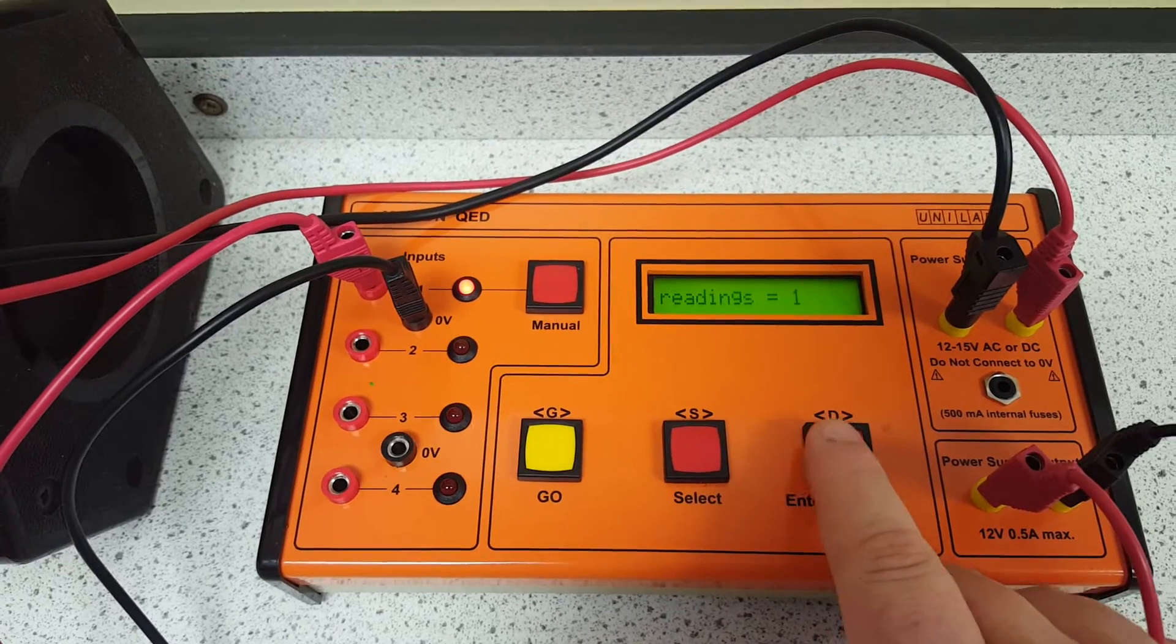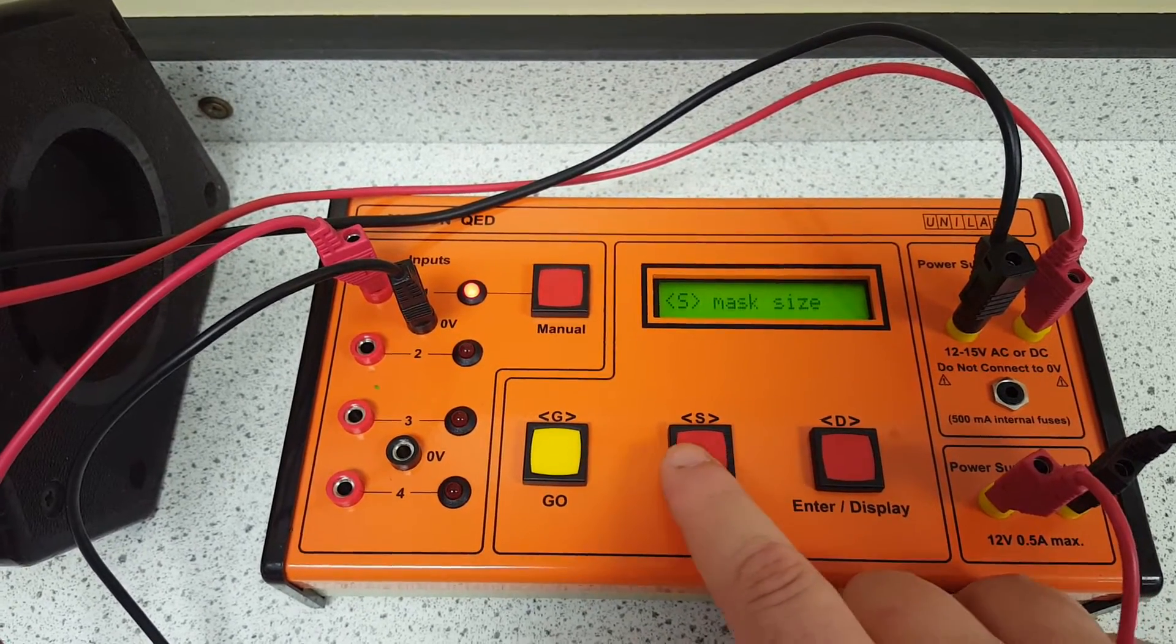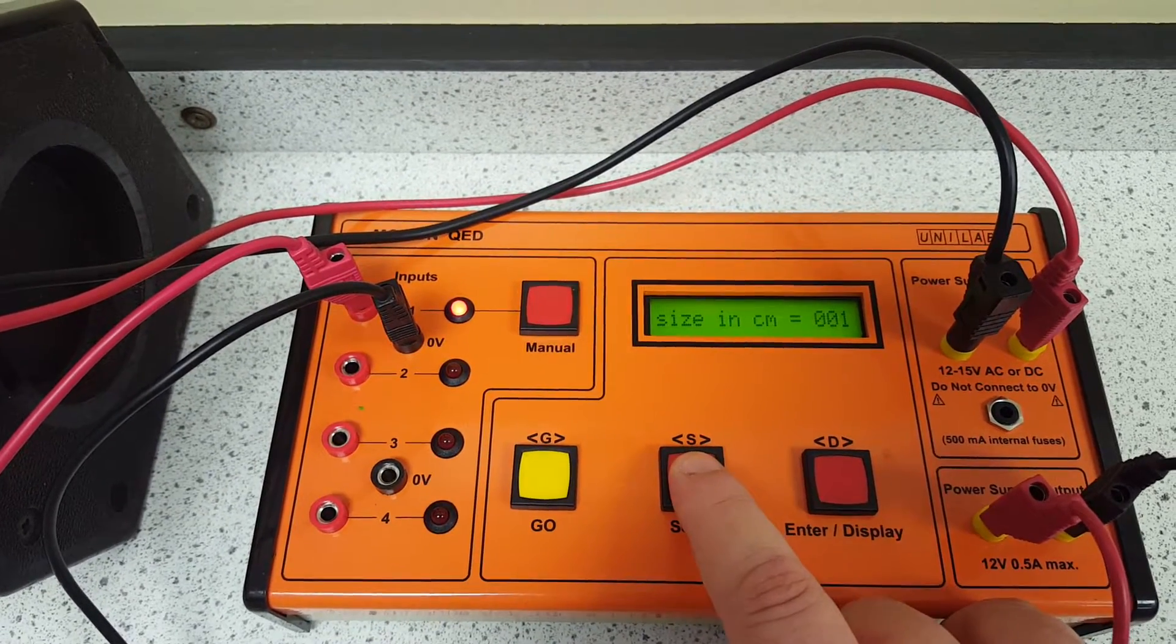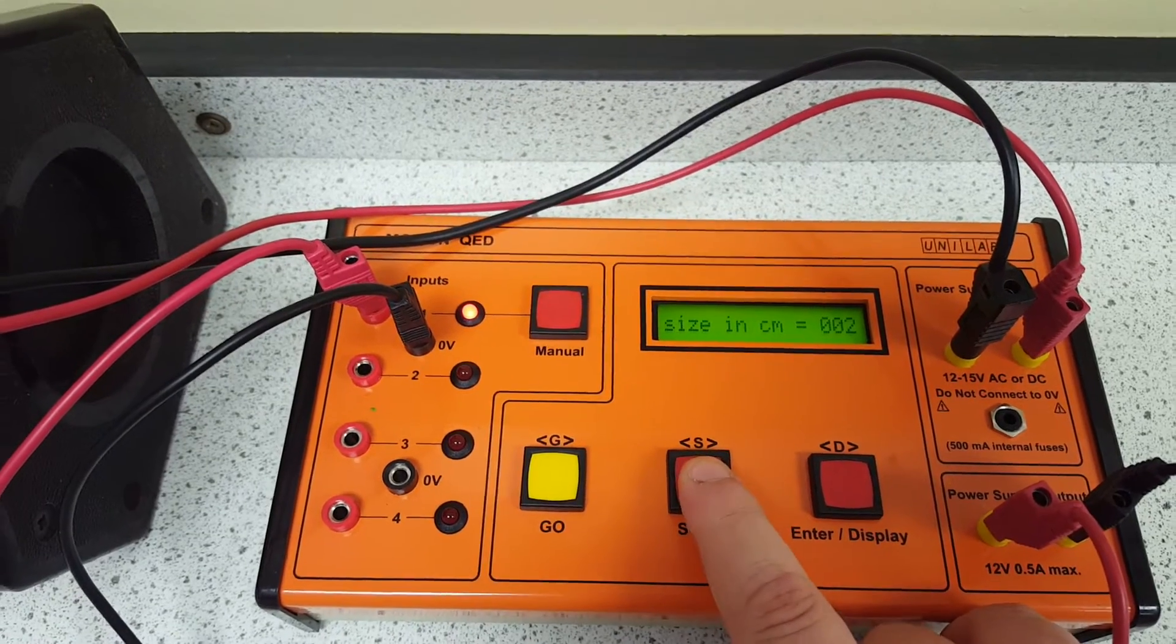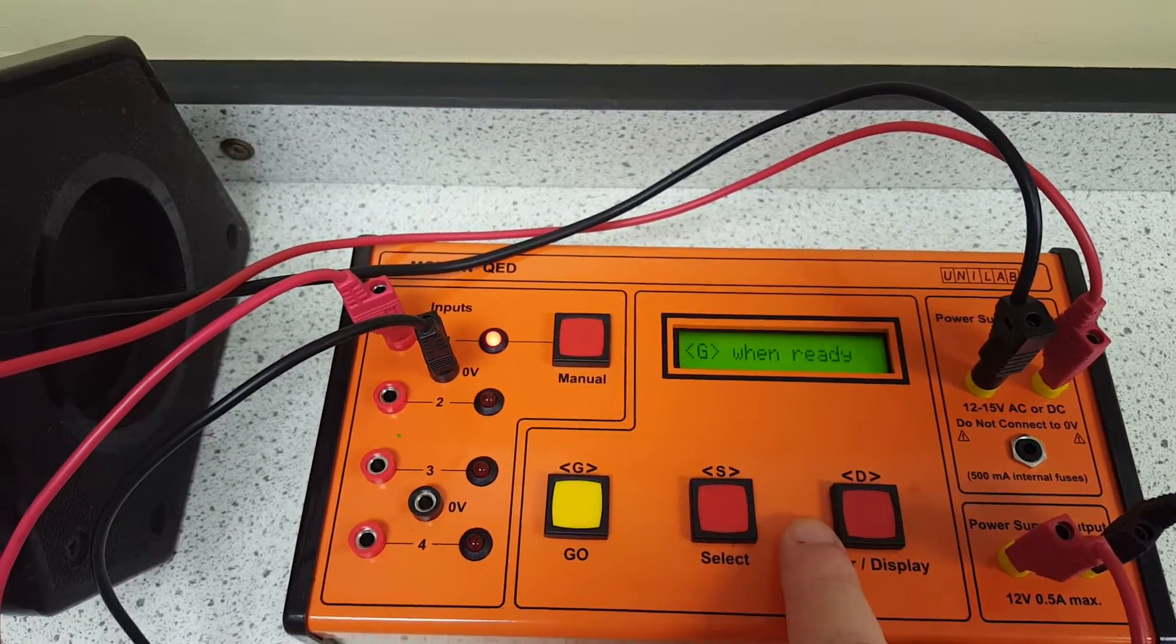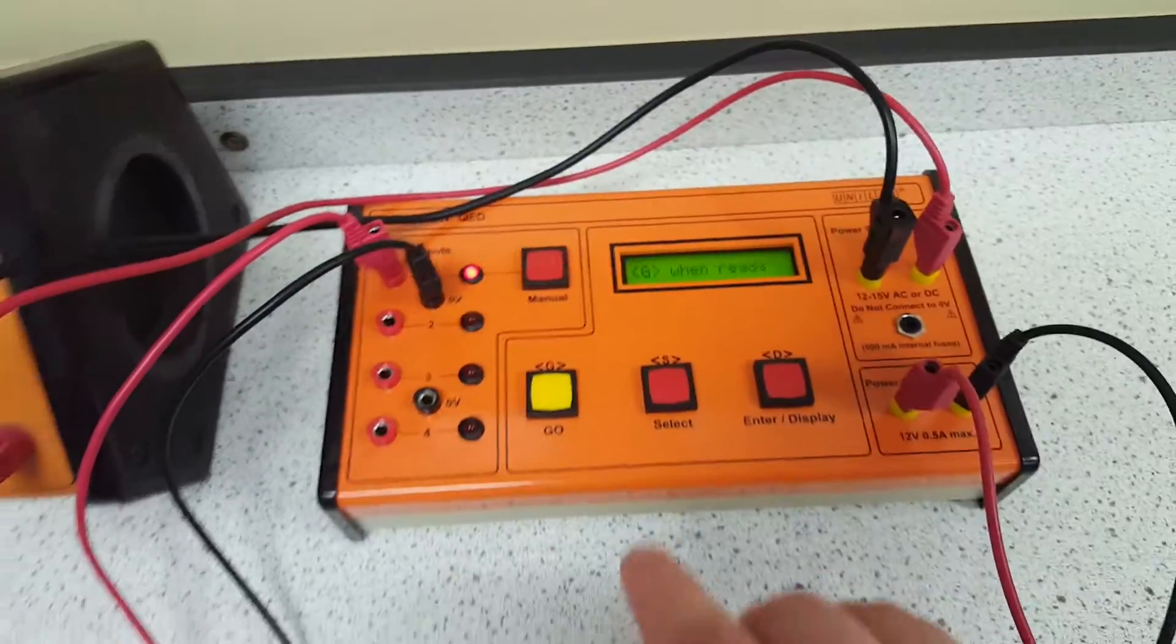We want just one reading, press ENTER, the mass size is three centimeters, so press again, press again, and select it, press G when we're ready to go.